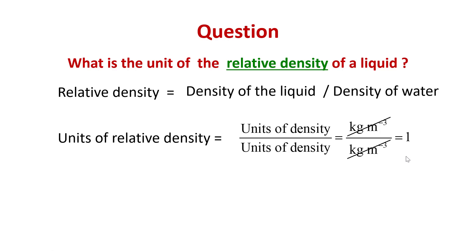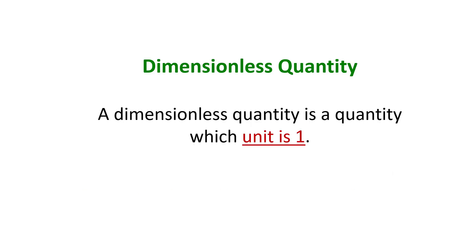This type of quantities where the unit will yield a value of 1 is known as a dimensionless quantity. We can now properly define what a dimensionless quantity is. A dimensionless quantity is a quantity which unit is 1.